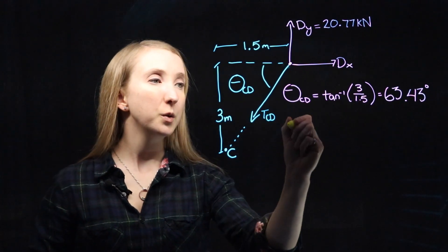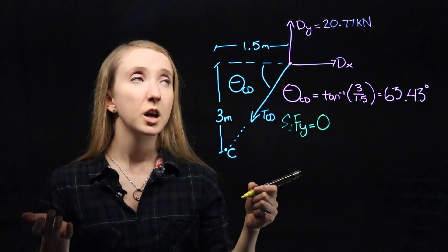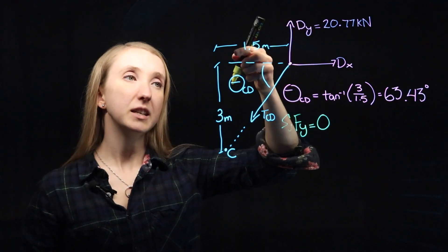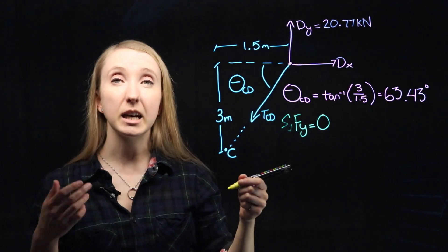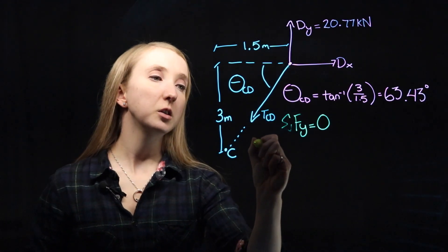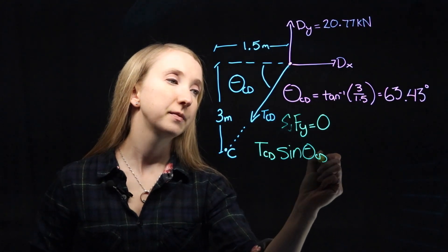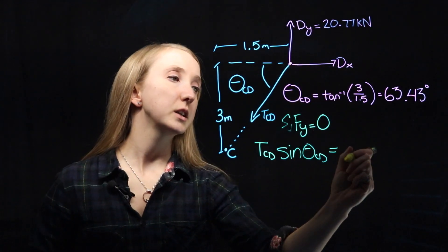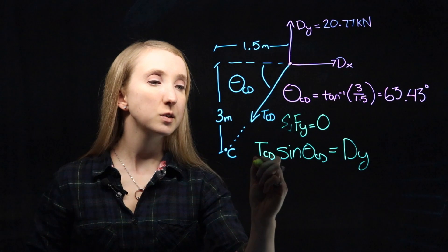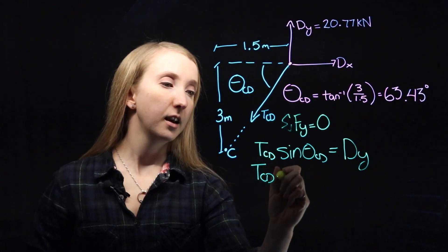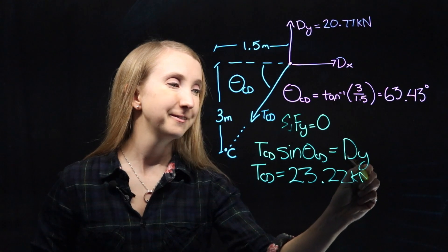Now from equilibrium, we know that the sum of the forces in the y direction have to be equal to zero. So dy has to be equal to the downward component of our force TCD. And since TCD is the hypotenuse of our triangle, we can solve for the vertical component by taking the sine of theta CD. And we said that that is equal to our force dy. And since we know theta CD and we know dy, we can solve for the tension. And we find out that it is equal to 23.22 kilonewtons.